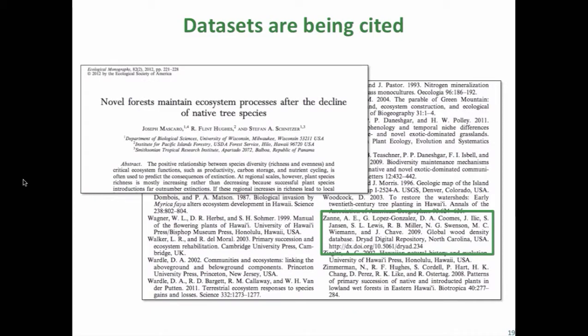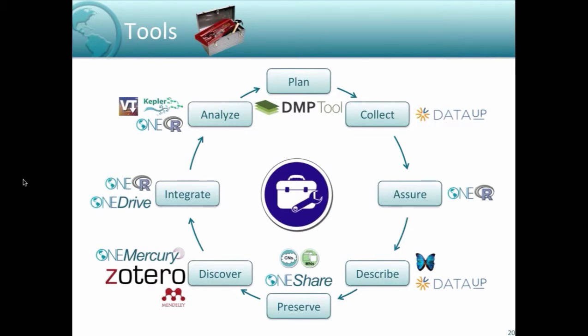This is what it looks like in the literature — a paper by Joseph Mascaro and colleagues citing a data product in the Dryad Digital Repository by Zan et al., accessible through a digital object identifier. In the next section, I'll cover tools that are instrumental in promoting open science, covering elements of the data lifecycle going from data management planning through collection, assurance, preservation, and analysis.